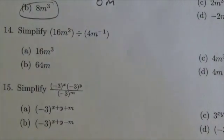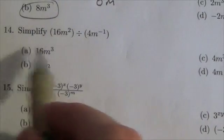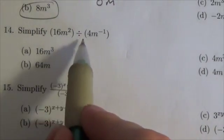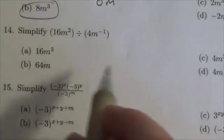Hi, everybody. This is the Math 10c Exponents and Radicals Review, and this is Multiple Choice Question 14. We're going to simplify 16m squared divided by 4 times m to the negative 1.